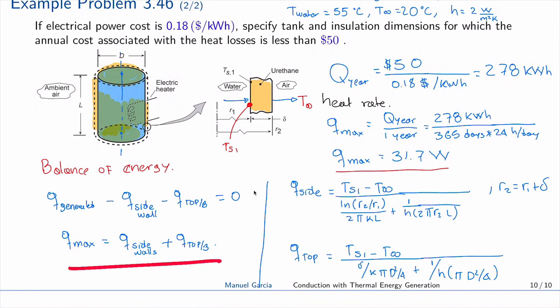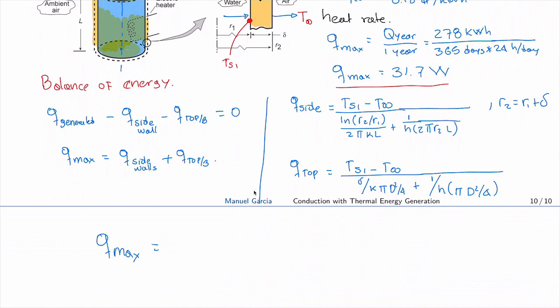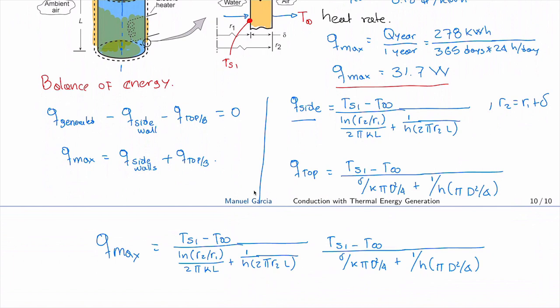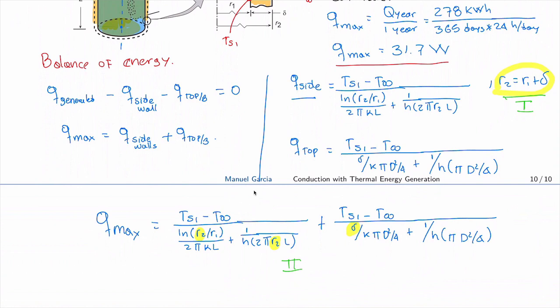So we have Q_max equal to the first term, Q on the side, plus Q on the top. What are our unknowns? Delta and r2. We have one equation here for delta in terms of r2 - equation 1 - and this is the second equation, equation 2. We have two equations and two unknowns, so we should be able to solve it.